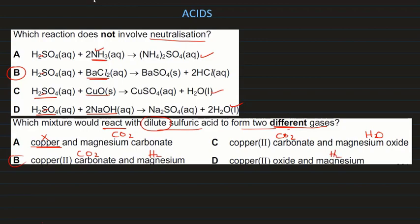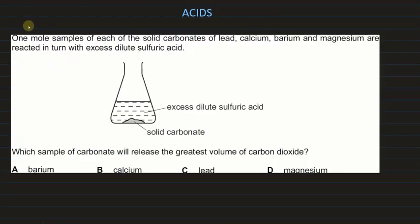In the next question, one mole samples of solid carbonates — lead carbonate, calcium carbonate, barium carbonate, and magnesium carbonate — are each reacted with excess dilute sulfuric acid. Which sample of carbonate will release the greatest volume of carbon dioxide?